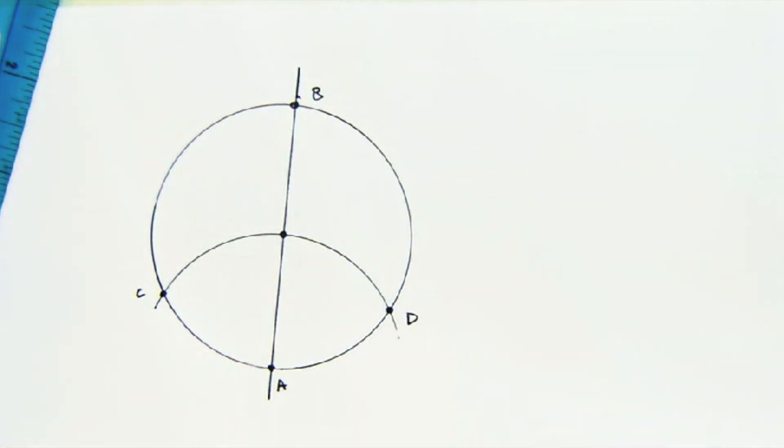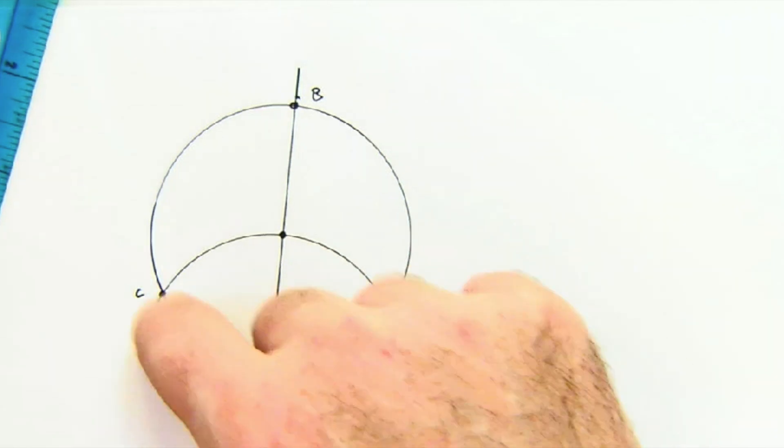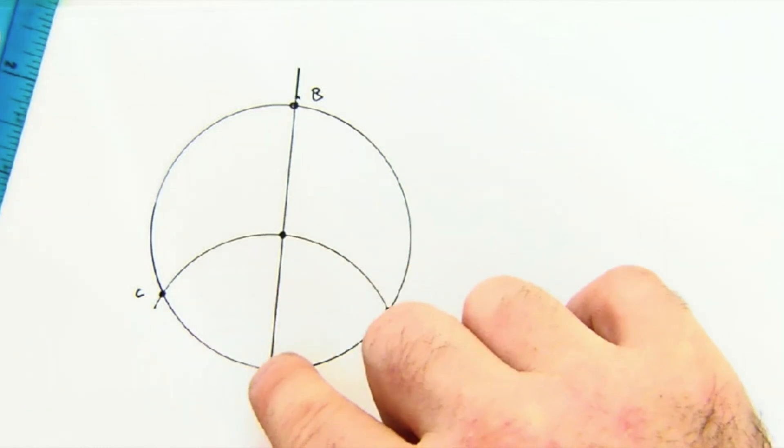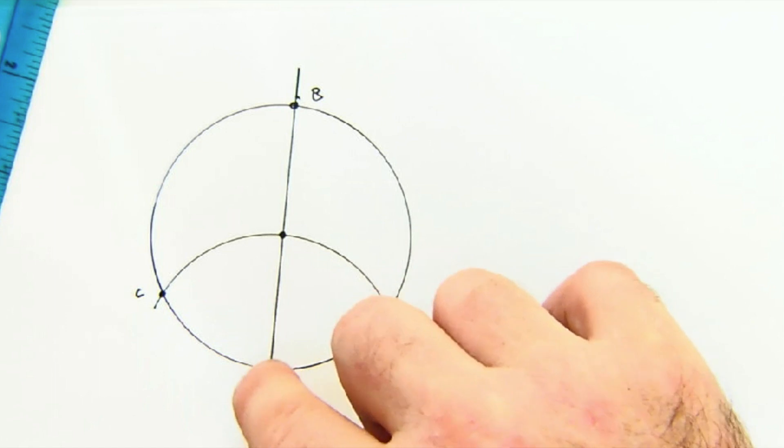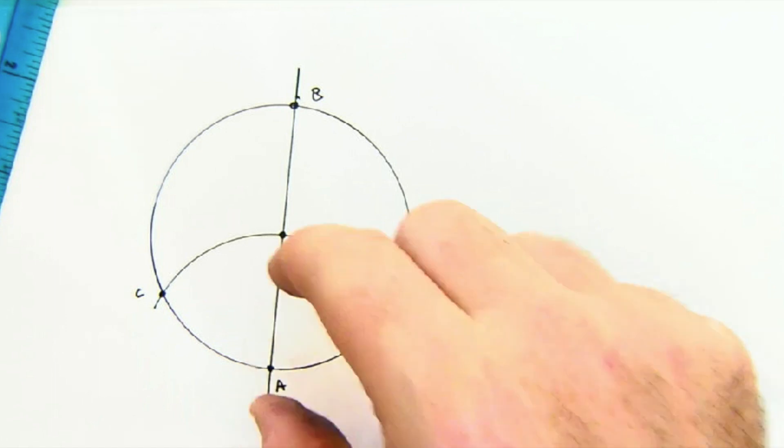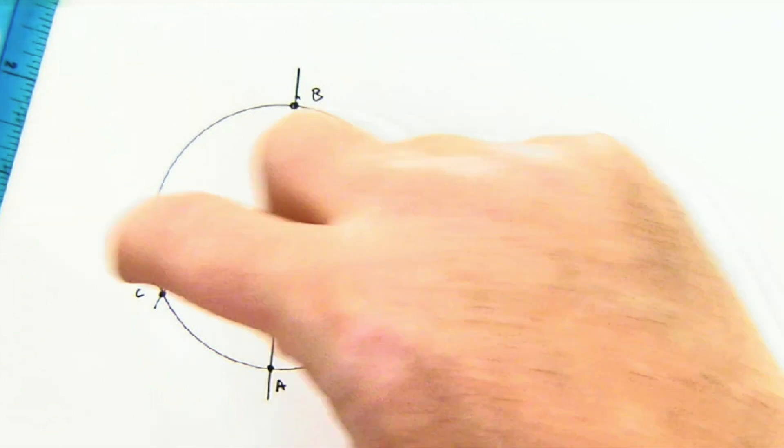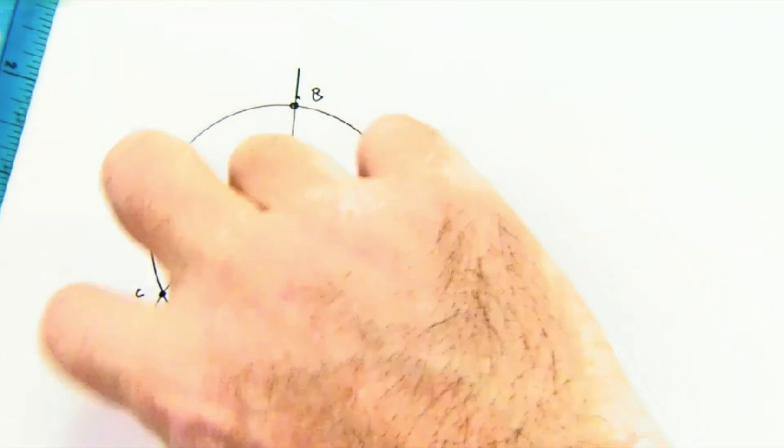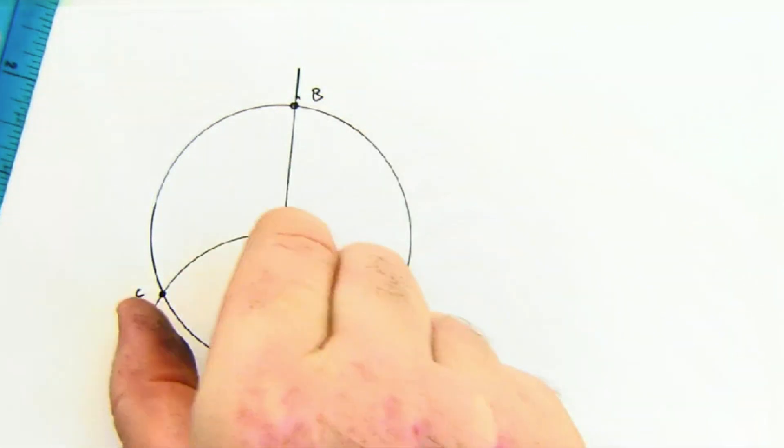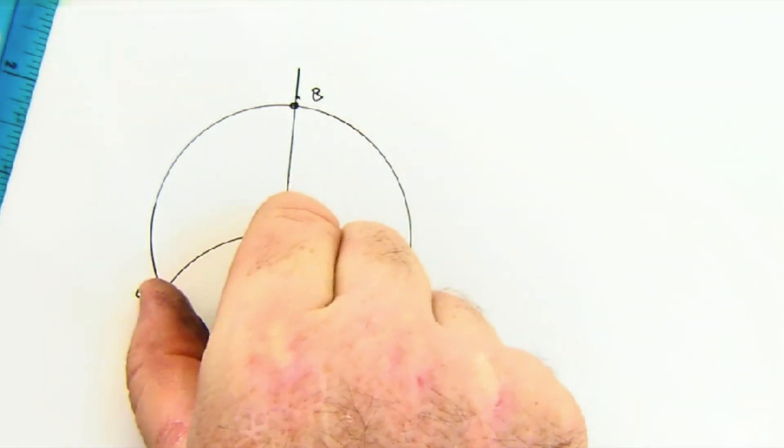Now I go through, if you're interested, why this forms a 60 degree increment here along the arc. Maybe I'll just do it quickly if you haven't watched the other videos first. But basically this length is equal to A to C because I use the same arc length and it's equal to the center to C as well.